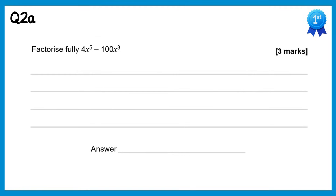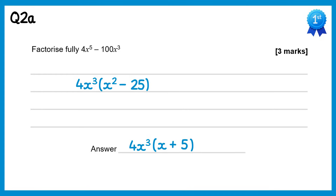For this question, first of all we're going to factorise out the highest common factor — that's going to be 4x cubed. Inside the bracket we would get x squared minus 25. But x squared minus 25 can be factorised further; it's the difference of two squares, which is x plus 5 times x minus 5. So the full answer is 4x cubed times x plus 5 times x minus 5.